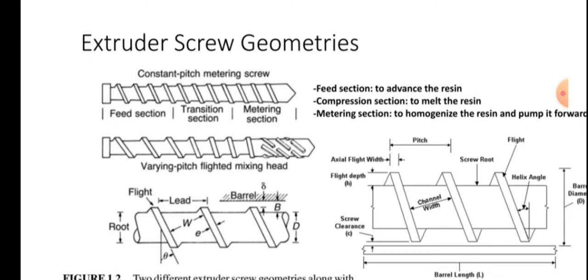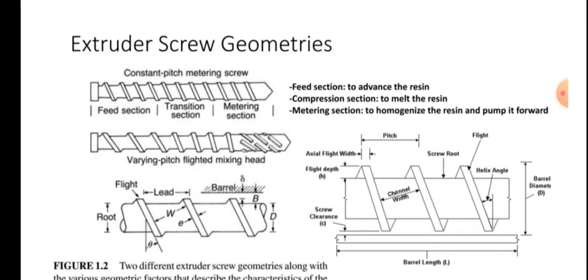Extruder screw geometries are shown in the figure. The constant pitch metering screw includes a feed section, transition section, and metering section. The feed section advances the resin, the compression section melts the resin, and the metering section homogenizes the resin and pumps it forward. A varying pitch flighted mixing head is also shown.